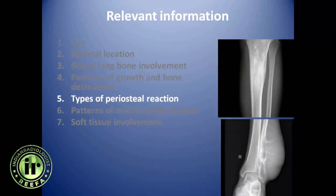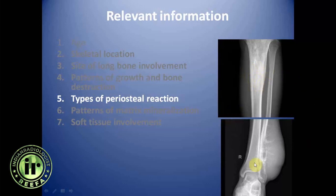There are multiple types of periosteal reaction, which can be categorized into non-aggressive and aggressive types. I will deal with periosteal reaction in a separate video, but here is a case of benign-looking periosteal reaction and a case of osteosarcoma giving an aggressive periosteal reaction.